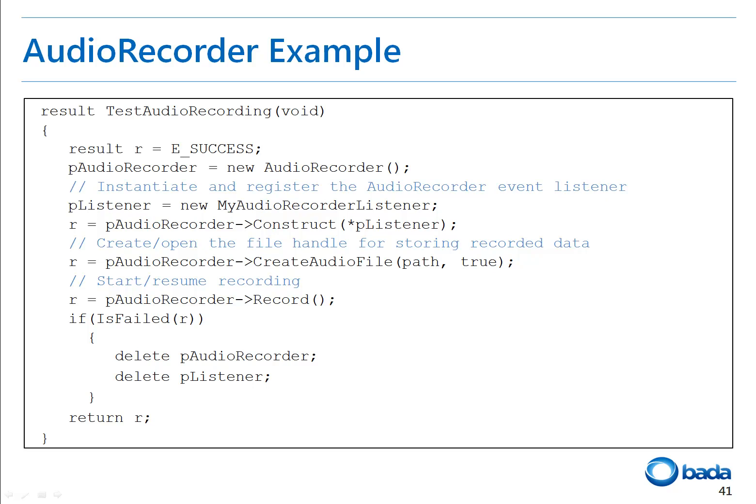Let's look at how to use the audio recorder APIs to record audio and store it to a file. In line 4, the audio recorder instance is created. In line 6, the audio recorder event listener, which implements iAudioRecorderEventListener, is instantiated. In line 7, the audio recorder instance is constructed with the audio recorder event listener. In line 9, the file to hold the audio data is created. In line 11, audio recording starts.